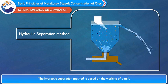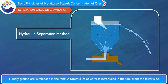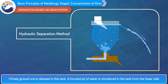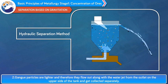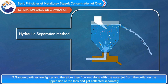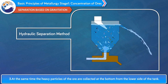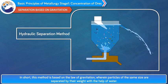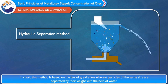Hydraulic separation method: this method is based on the working of a mill. Finely ground ore is released in a tank, and a forceful jet of water is introduced from the lower side. Gang particles are lighter and therefore flow out with the water jet from the outlet on the upper side and are collected separately. The heavy particles of the ore are collected at the bottom from the lower side of the tank. This method is based on the law of gravitation, wherein particles of the same size are separated by their weight with the help of water.